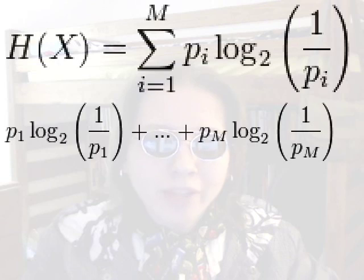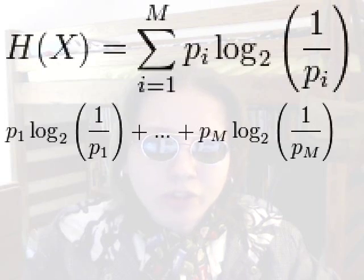So once we've evaluated the expression to the right of the sigma for every symbol's probability, we're going to add all of the results together. That's what summation is.